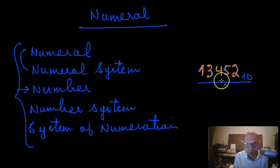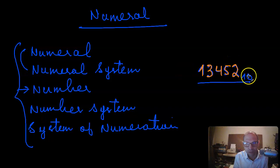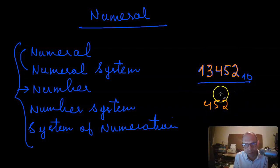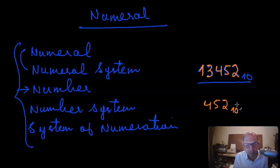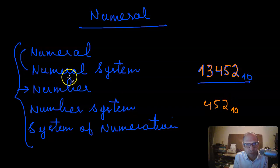As soon as you write a number, all of these things become clear. First, you want to write a number — for example, 452. That number exists in some number system, such as the decimal, octal, hexadecimal, or binary number system. The number has to be in some system, which is the number system. Then, in order to write this number, you need different characters like 4, 5, and 2 — these are called the numerals.